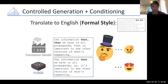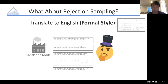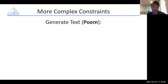One thing you might wonder is: why don't we just do rejection sampling? You can just sample a bunch of times from the translator until you get one that passes. This might work for some simpler constraints like topic or formality, but it'll be totally intractable when you use constraints that are very rarely satisfied by your generator distribution.